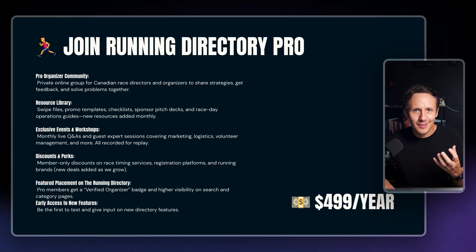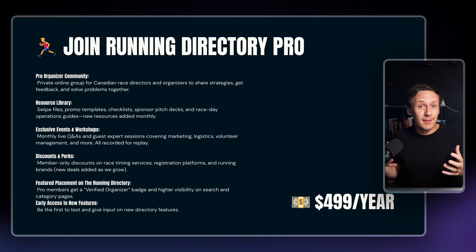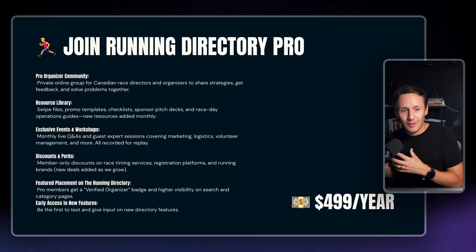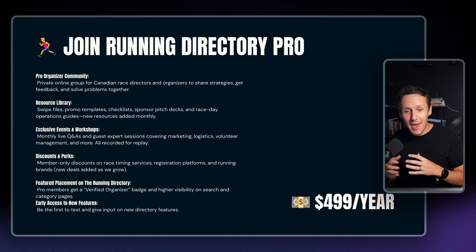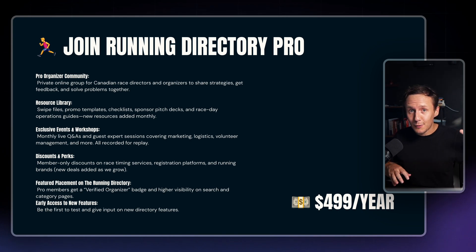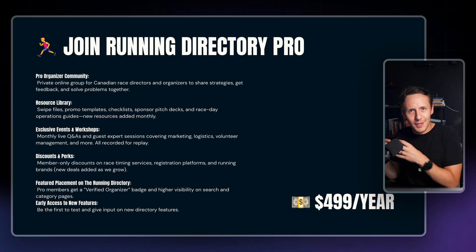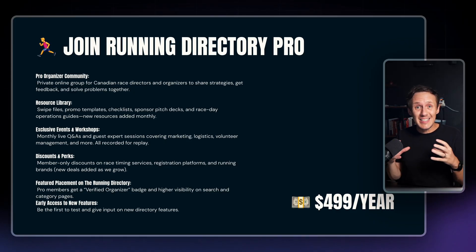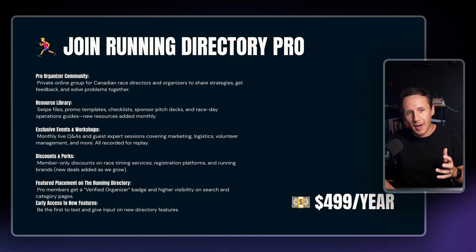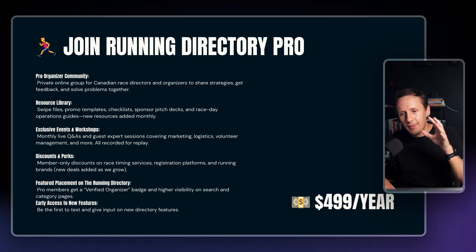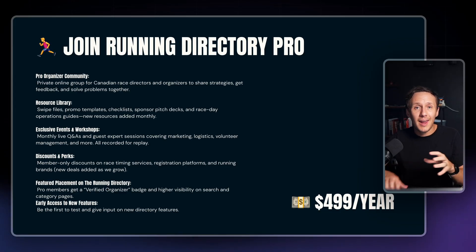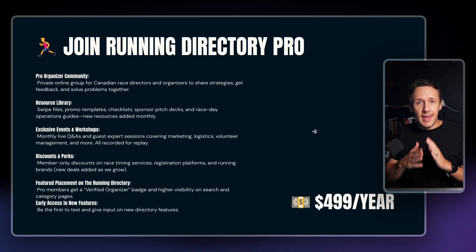You can also add as a perk a featured placement on your site — that means they get a verified badge and higher visibility in search and filtering. Now, that feature that was initially going to be your primary way of making money is essentially a bonus. Keep your pricing simple: have an annual plan, have a monthly plan, and that will be more than enough to get you started.